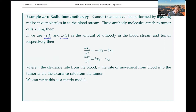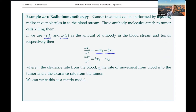...then we can write down the rate of change of antibody in the bloodstream and in the tumor as dx1/dt and dx2/dt. If A is the clearance rate from the blood, we have minus A times x1. If B is the rate of movement from blood into the tumor, we have minus Bx1 in the first equation - antibody leaving the blood - and plus Bx1 in the second, going into the tumor. If C is the clearance rate from the tumor, we have minus C times x2.